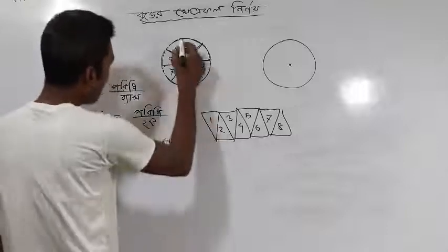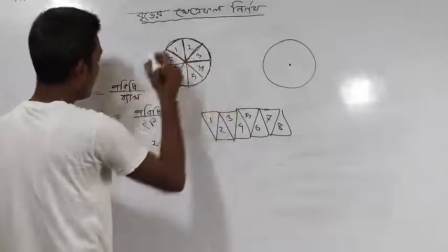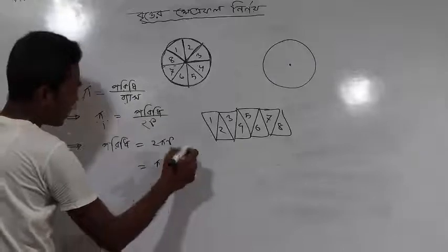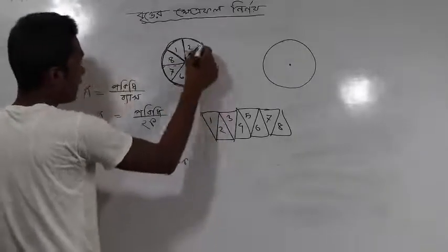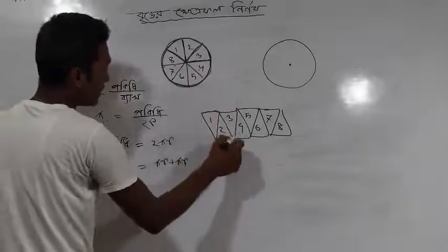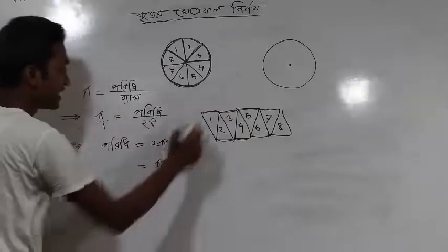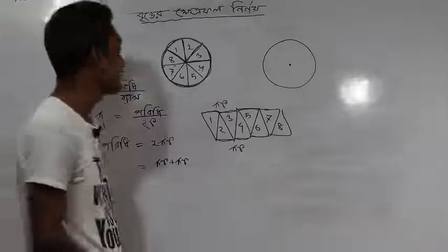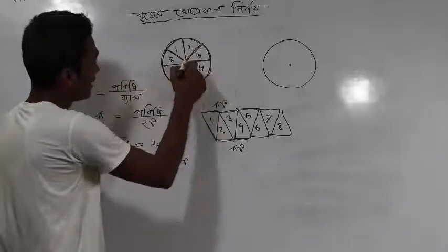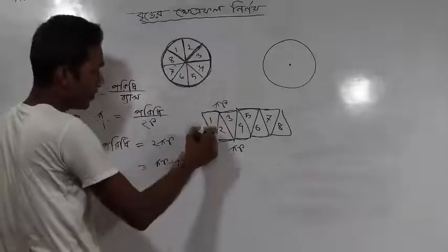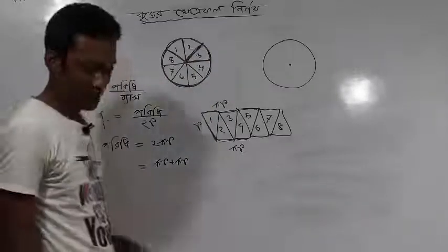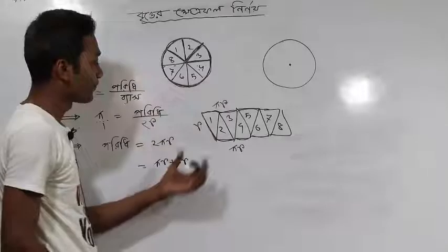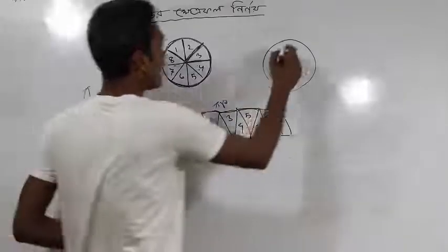Now here, if we think about the perimeter (পরিধি), we can measure the perimeter. The perimeter is divided into equal equal parts — so the circumference is divided into equal equal sections here.